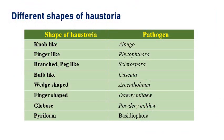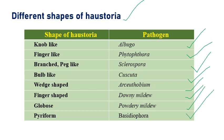Haustoria is the nutrient-absorbing organ, and it comes in different shapes depending on the pathogen. Not all pathogens produce the same kind of haustoria. Knob-like haustoria is produced by Albugo. Finger-like haustoria is produced by Phytophthora. Branched or peg-like haustoria is produced by Sclerospora. Bulb-like haustoria is produced by Cuscuta. Wedge-shaped haustoria is produced by Arceuthobium. Finger-shaped haustoria is generally produced by downy mildews. Globose haustoria is produced by powdery mildew. Pyriform haustoria is produced by basidiospore fungi. These are one example each — other pathogens may also produce these types.